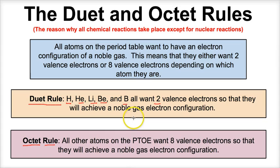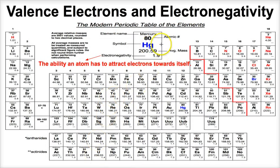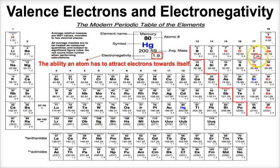Let's take a look at a periodic table and determine how many valence electrons are in each group. Some periodic tables will actually show you the electronegativity value for each element — those little numbers in the bottom right-hand corner of each box. For example, the most electronegative element on the periodic table is fluorine, with an electronegativity of 4.0. The least electronegative are francium and cesium, which have an electronegativity of 0.7.